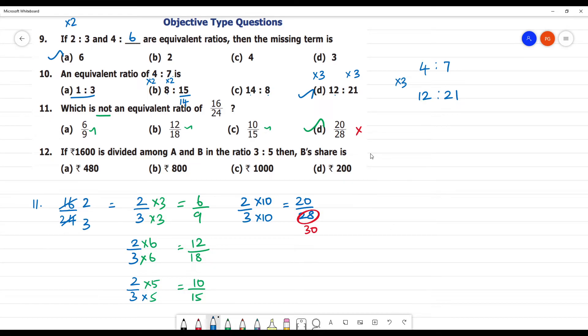Next. 1,600 is divided among A and B in the ratio 3 is to 5. So, 3 is to 5, we will have 8 equal parts. 3 by 8 multiplied by total, 1600. Total parts are 8. This is A share. 3 by 8 multiplied by 1600 is 3 times 200, 600 rupees.